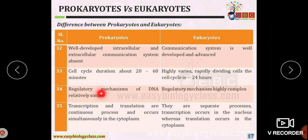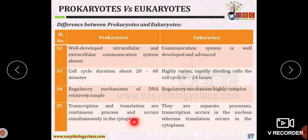The regulatory mechanism of DNA is simple in prokaryotic organisms but complex in eukaryotes. Transcription and translation are continuous processes that occur simultaneously in the cytoplasm of prokaryotes because of the absence of a nucleus. In eukaryotic cells, transcription and translation are separate processes: transcription occurs in the nucleus whereas translation occurs in the cytoplasm.